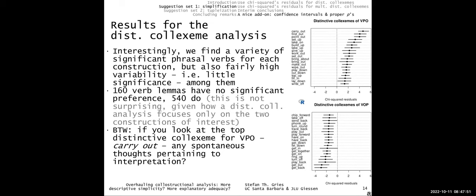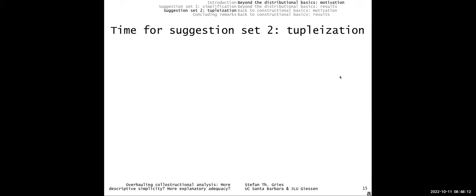That was suggestion set one: use Pearson residuals because they're super fast, and because they're fast, consider doing bootstrapping to see whether verbs are significantly attracted to a construction. Suggestion set two picks up on ideas I first formulated in 2019, which I've been refining over the last few years.